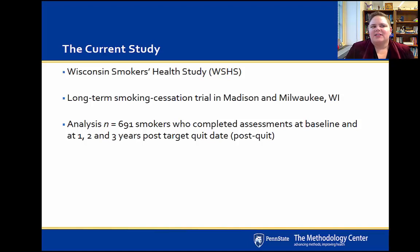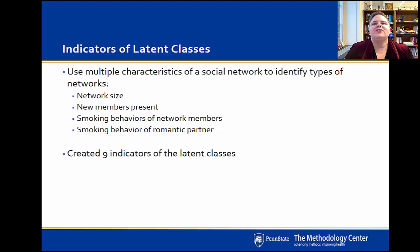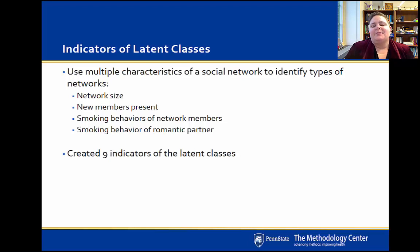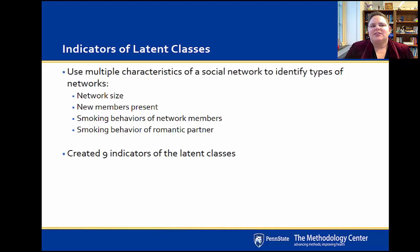This analysis focuses on transitions in former smokers' social network statuses across that three-year post-quit period, and this video specifically focuses on transitions from time one to time two — one year post-quit to two years post-quit. We examined the types of social networks that exist among smokers trying to quit. We used multiple characteristics: network size, whether new members were present at each wave, and the smoking behaviors of network members and a romantic partner if present — creating nine indicators to identify the latent classes.